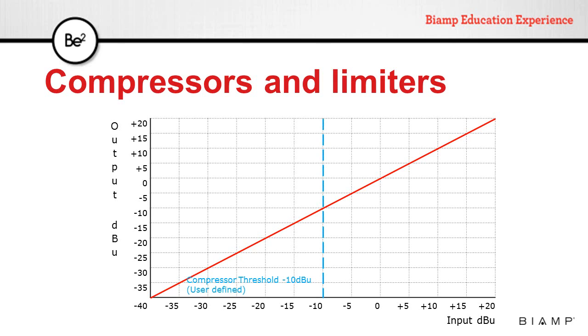The threshold determines at what level the compressor will start affecting the input signal. This level is user defined. At a ratio of 1 to 1, the compressor's output will be the same as the input.